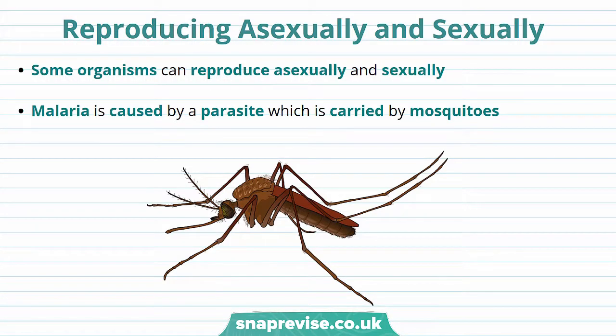Reproduction is when organisms make more of themselves. There are two types of reproduction: asexual and sexual reproduction.